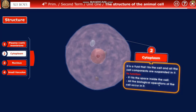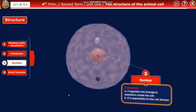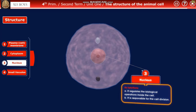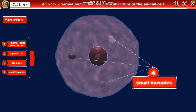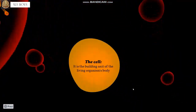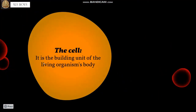All biological operations of the animal cell also occur in the cytoplasm. Next is the nucleus, which regulates the biological operations inside the cell and is responsible for cell division. The animal cell also has sap vacuoles.